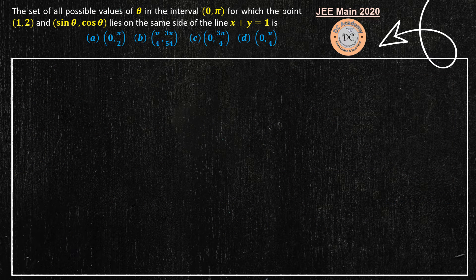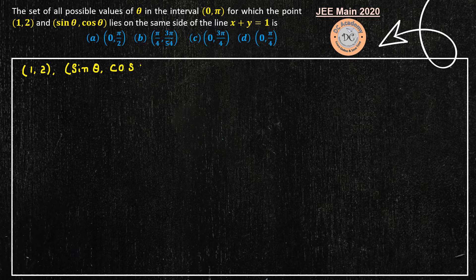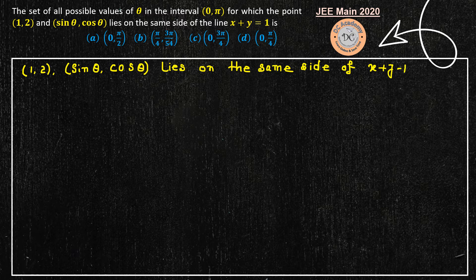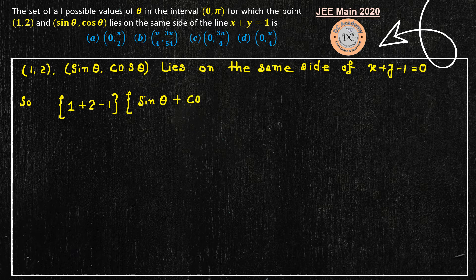Applying this theory: the points (1, 2) and (sin theta, cos theta) lie on the same side of the line x plus y minus 1 equal to 0. Substituting (1, 2) gives 1 plus 2 minus 1 equals 2, which is a constant. Multiplying by (sin theta plus cos theta minus 1) must be greater than 0.